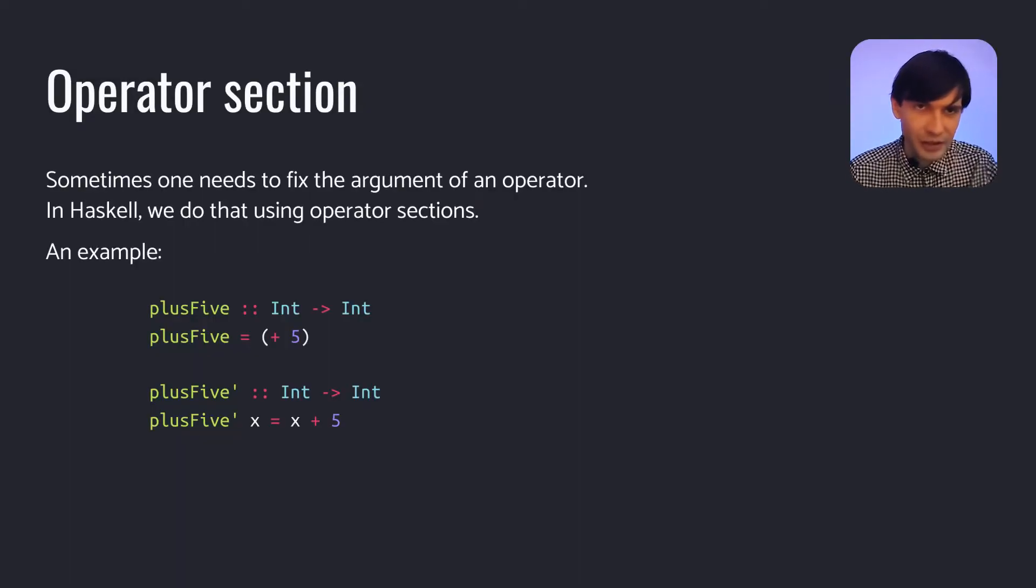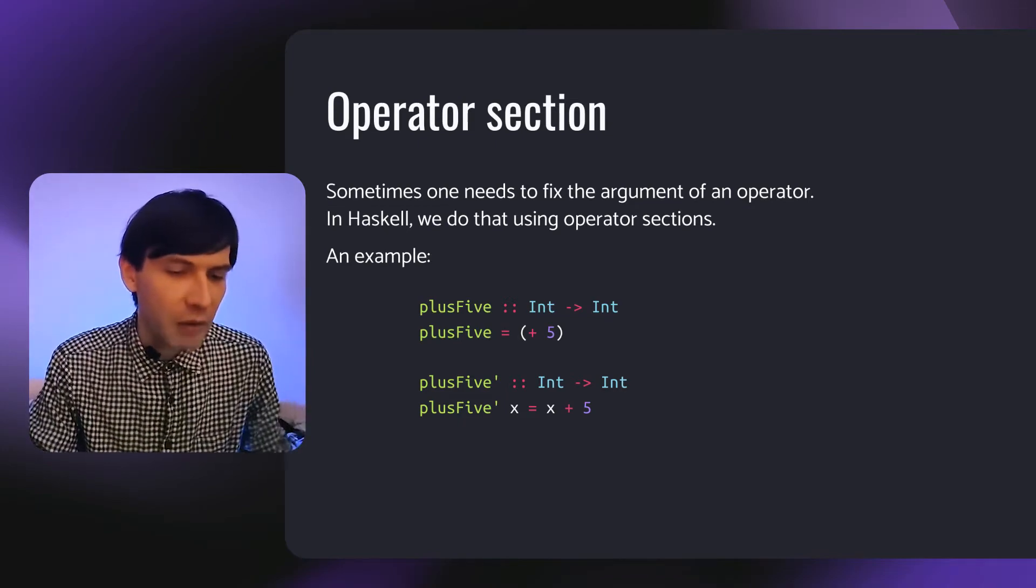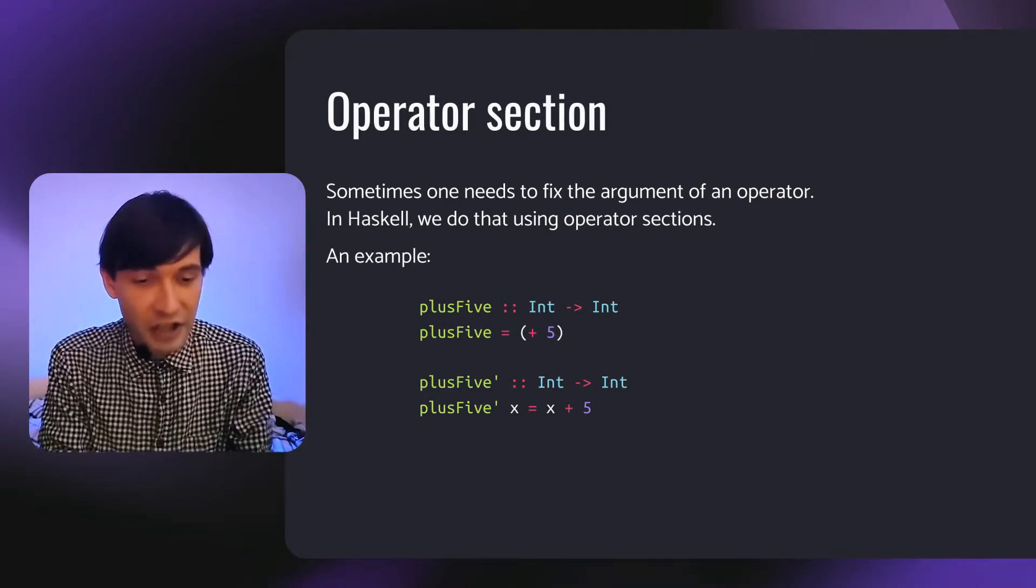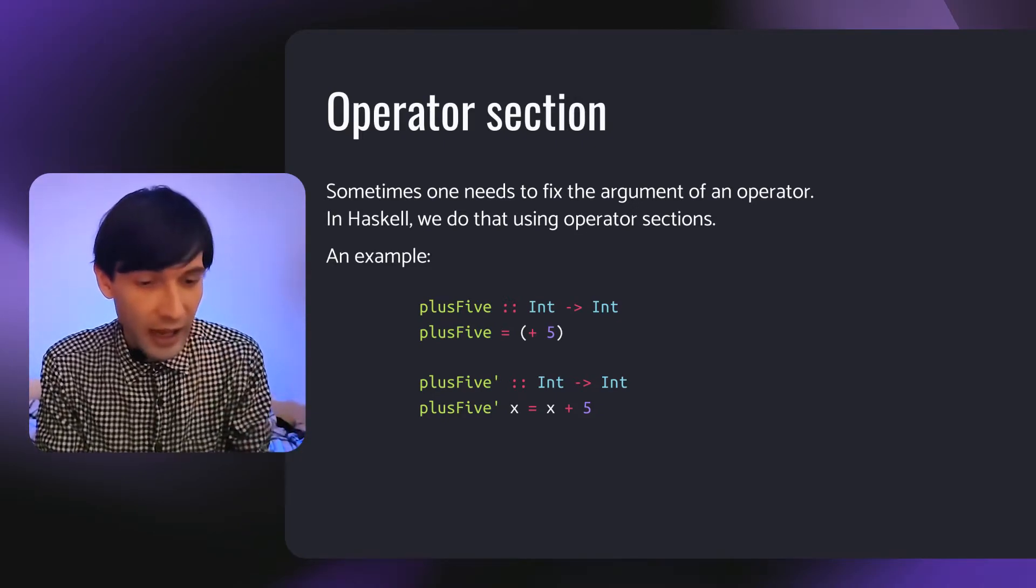These functions are equivalent to each other. Plus 5 and plus 5 prime. Let's have a look at plus 5 prime first. This function takes int and int and returns another int. We'll take x of int and returns x plus 5. But alternatively, we can implement this function using operator sections in the following way. The equation is a little bit more simple. Because here we just tell the compiler that plus 5 is the same as the function that adds 5, without any arguments.